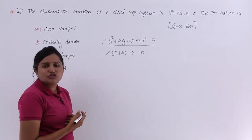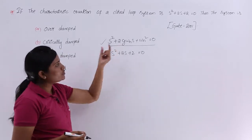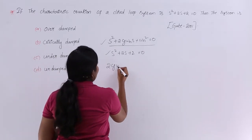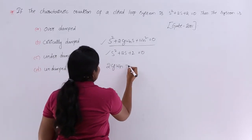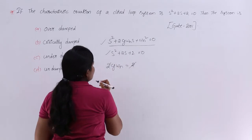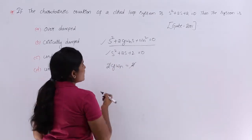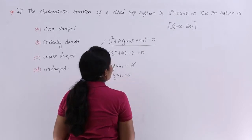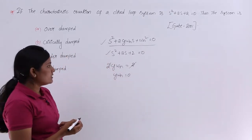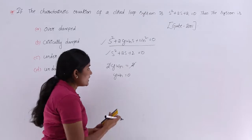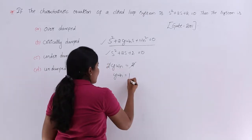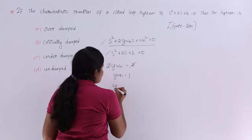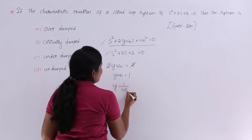Our requirement is to get zeta, so I am going to compare the S terms. Comparing: 2·ζ·ωn = 2, the 2s cancel, so ζ·ωn = 1, which gives ζ = 1/ωn.